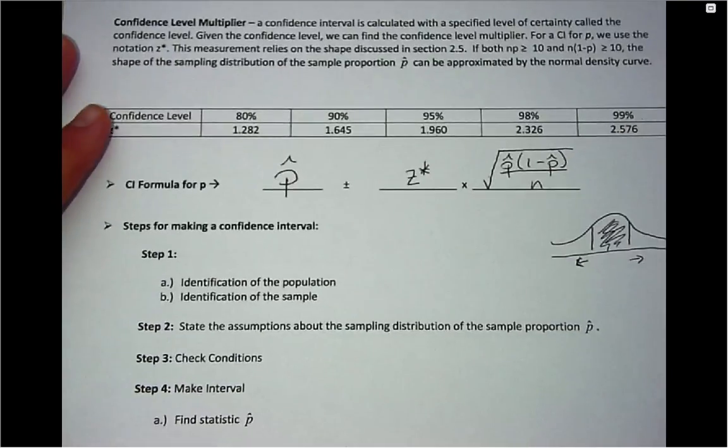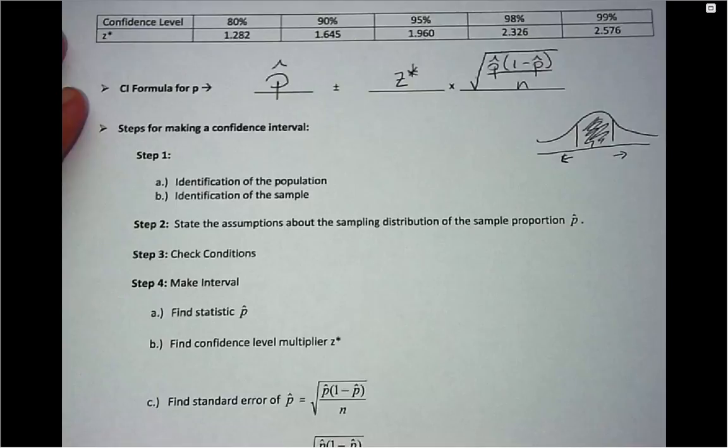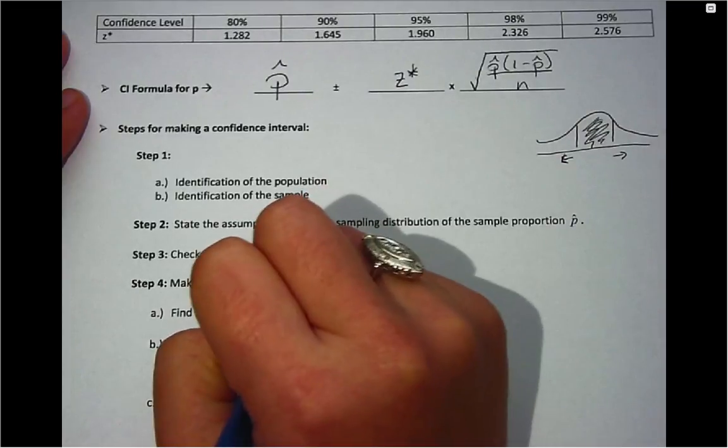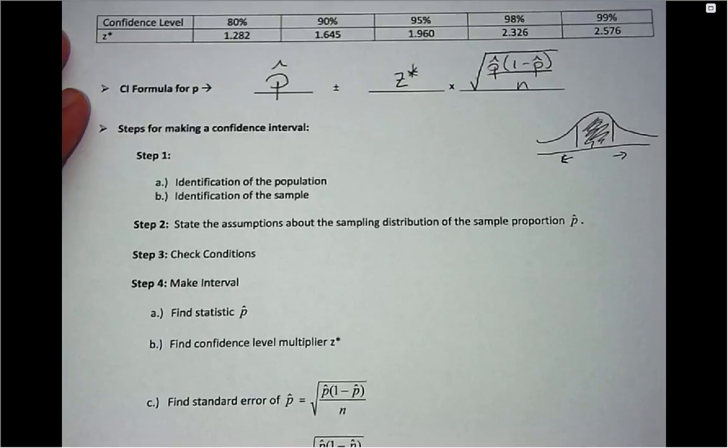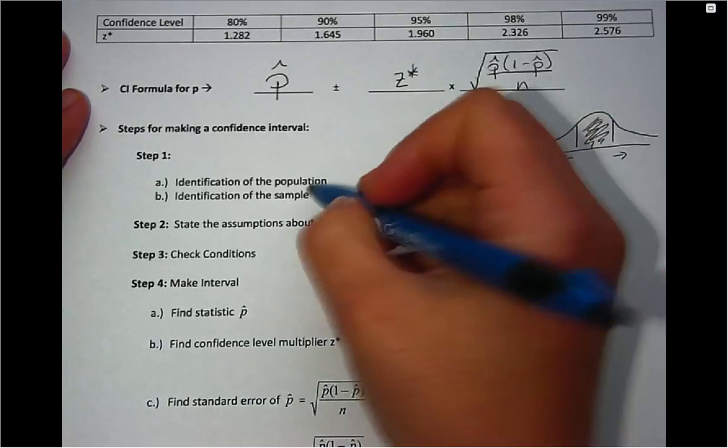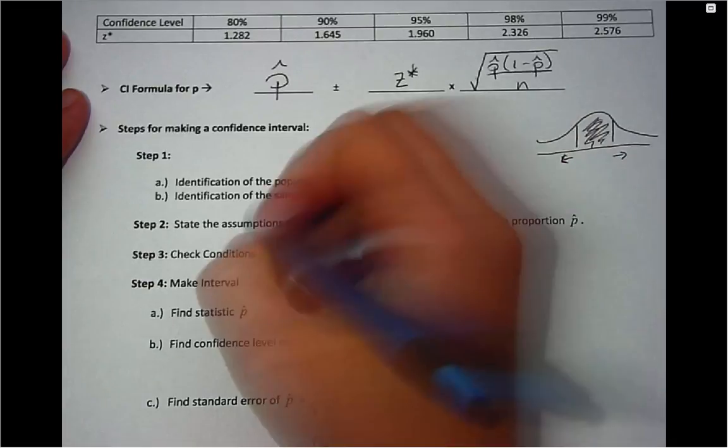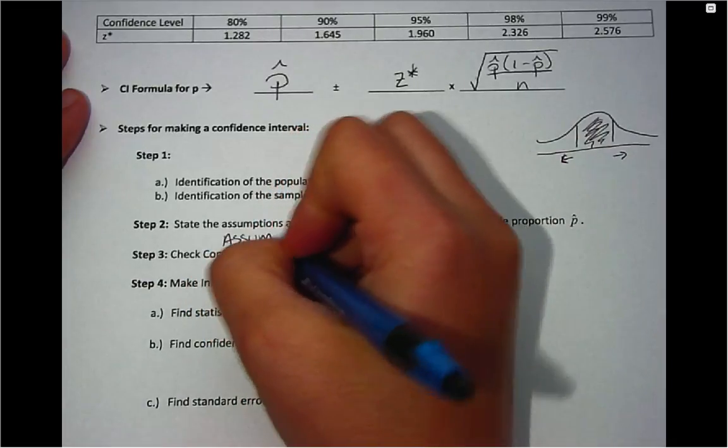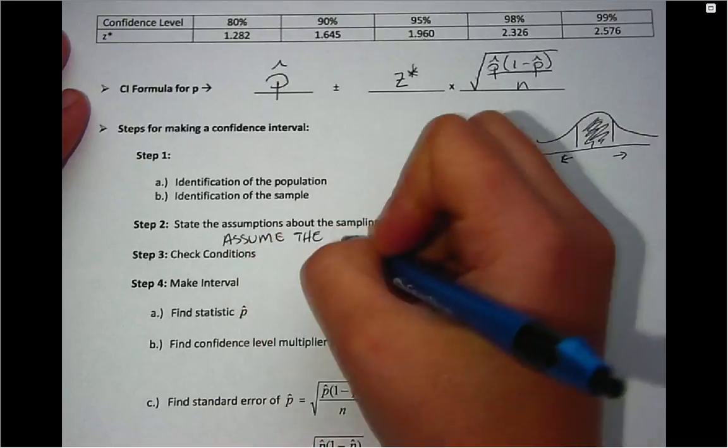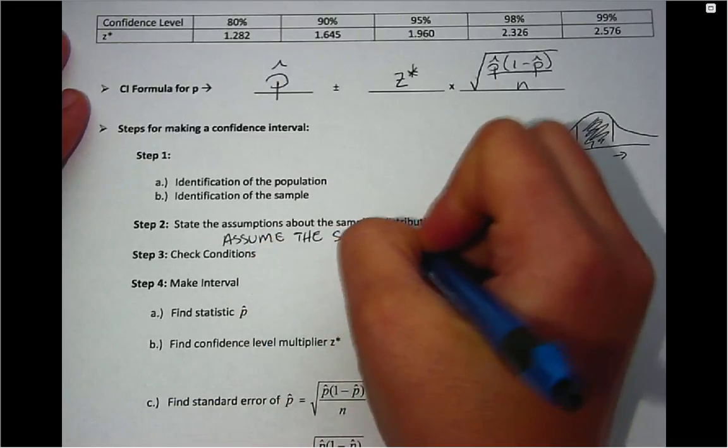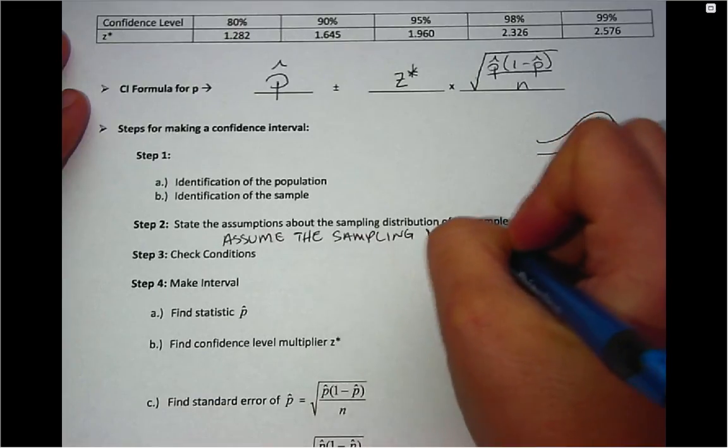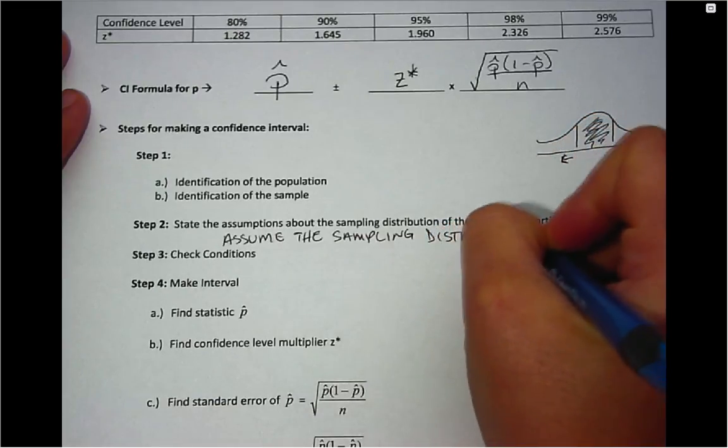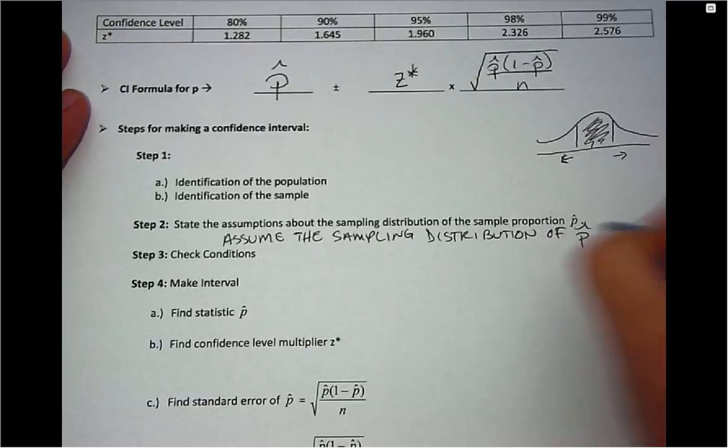I've given you some steps that are the same as what's shown in your textbook in terms of how to calculate a confidence interval. First, you'll identify the population. Who do you want to talk about? And then you'll identify the sample. Who's going to answer the question about the population? Then you'll state an assumption. Here we're always going to assume that the sampling distribution of the sample proportion p-hat is the normal distribution.